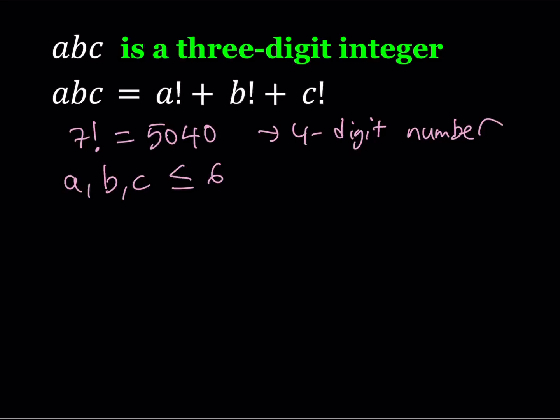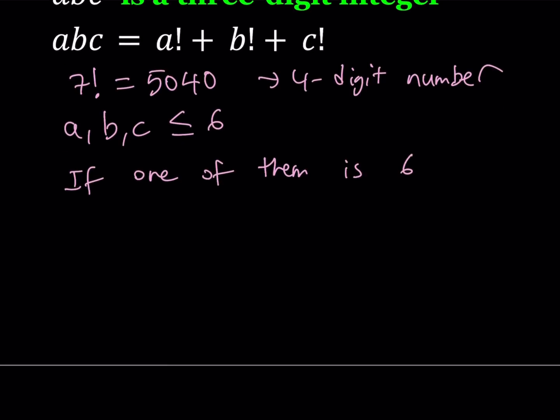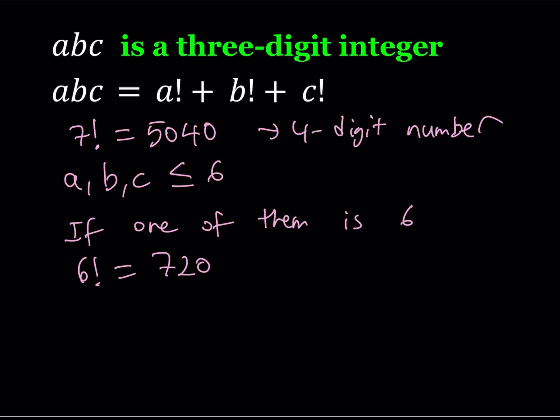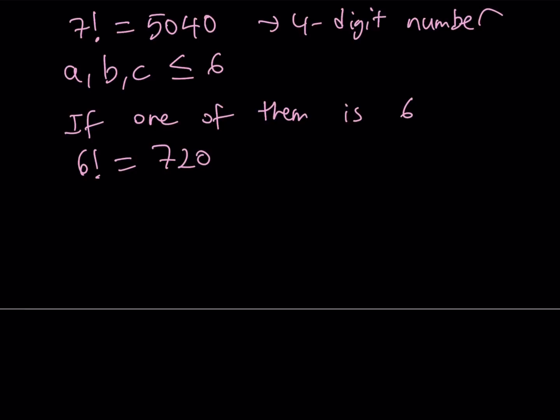Now what happens if one of these digits is a 6? We know that 6 factorial is equal to 720. So since the other digits can also be non-zero — say A is equal to 6 and B or C is non-zero — this number is going to be at least 720. But this is impossible because we cannot use 7, 8, or 9. We already proved that A, B, C needs to be less than or equal to 6, so none of these digits can be a 6 either. This gives us a better upper bound: A, B, C basically needs to be less than or equal to 5.